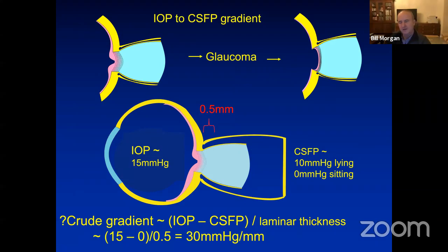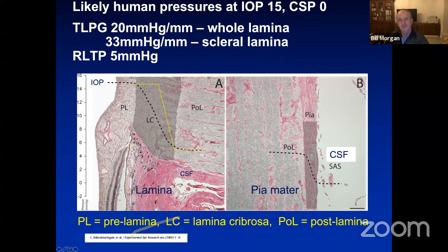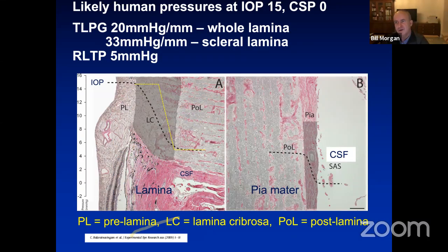Looking at an image with figures: we now knew the relevant pressures. We looked at the human lamina cribrosa and the pia mater of the optic nerve, compared that to the dog, and then did a rough calculation of what the human trans-lamina pressure gradient in the normal situation would be.